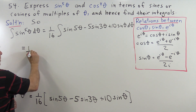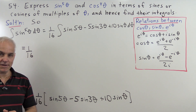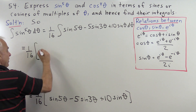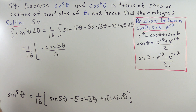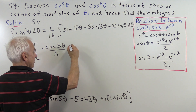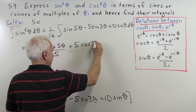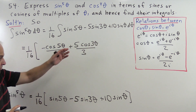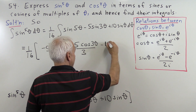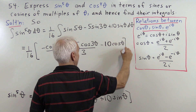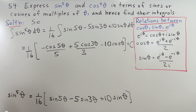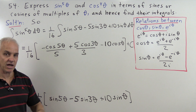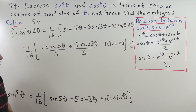We can write that out: the integral of sine 5 theta gives minus cosine 5 theta divided by 5. The integral of minus 5 sine 3 theta gives 5 cos 3 theta over 3. And the integral of 10 sine theta gives minus 10 cos theta. Of course we can always add a constant of integration. This is a very useful technique — converting the expression into cosines and sines of multiples so that integration proceeds much more simply.